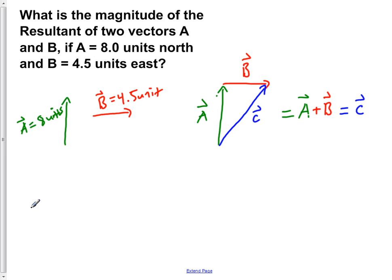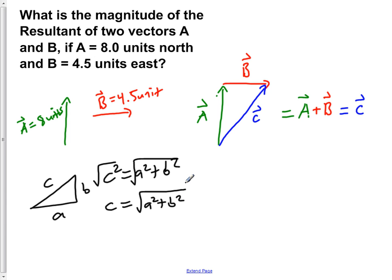From algebra classes, you'll remember the Pythagorean theorem, where you have A, B, and C, and you want to find the length of the hypotenuse. That can be found by C squared equals A squared plus B squared. When you want to solve for C, simply take the square root of both sides. You're left with C equals the square root of A squared plus B squared.